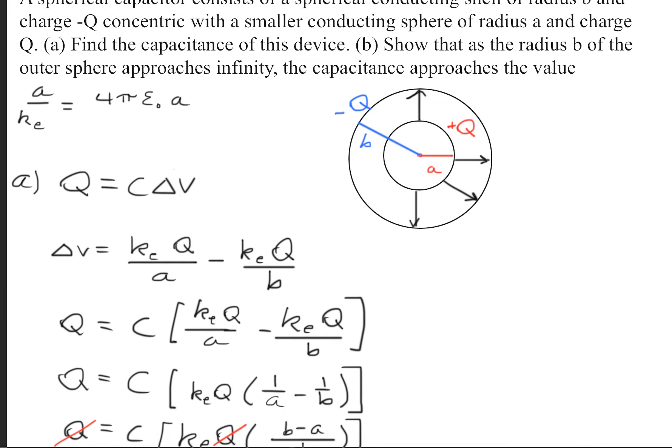Part B is asking to show that as the radius b of the outer sphere approaches infinity, the capacitance approaches the value a/k_e = 4π·ε₀·a. We have to prove that it approaches this value.